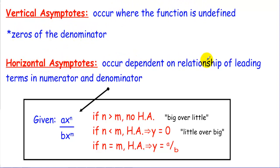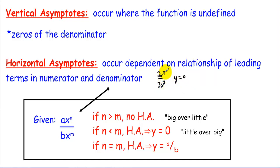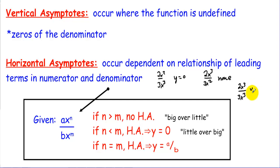Horizontal asymptotes depend on the relationship of the leading terms in the numerator and denominator, given ax^n over bx^m. Here's a quick summary: if we have 2x² over 3x³ — little power over big power — the horizontal asymptote is y = 0. If we have 2x³ over 3x² — big over little — we have no horizontal asymptote. If we have 2x³ over 3x³ — same power — the horizontal asymptote is y = 2/3, the ratio of the coefficients.